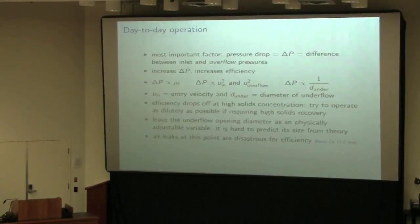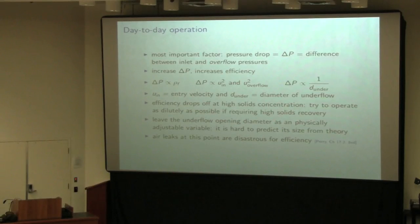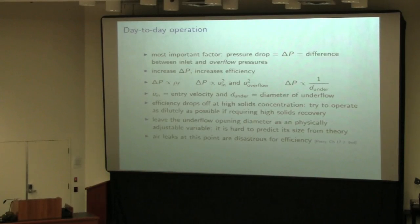A greater delta P will give you greater efficiency, though with some diminishing returns. Efficiency is also affected by solids concentration — we always want the solids percentage in the inlet as dilute as possible. The lower the concentration of solids coming in, the higher the efficiency of recovery. It's not uncommon for companies to add excess air into the feed to the cyclone to dilute the stream and get higher recovery of solids. This means you may need to buy more cyclones or operate many small cyclones in parallel.